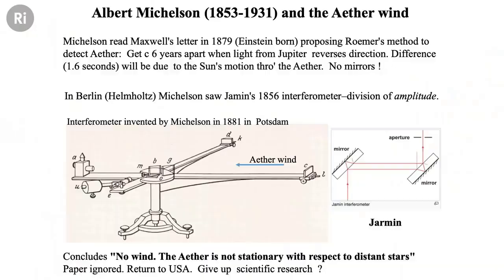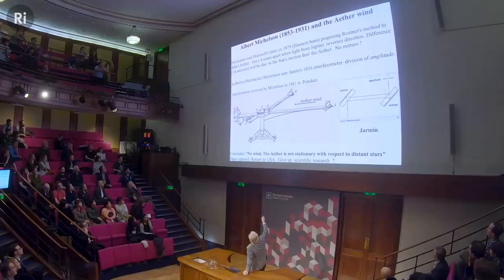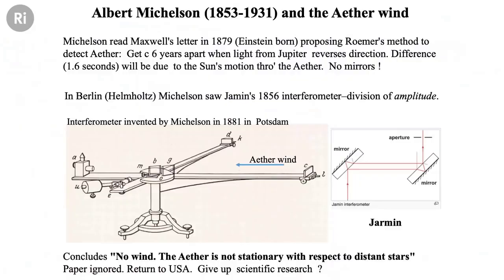He expected to find that light went faster depending on how the Earth's speed was with respect to the distant stars. Here's his interferometer — entirely his own original invention. He sent a beam of light; with the Earth moving to the right, the ether wind on the surface would be to the left. He sent a beam of light across the ether and back from a mirror, and then into it and back on another mirror. Like people swimming across rivers with a current, the time to go across and back is different from the time to go into it and back. Where the two beams meet, he let them interfere, and by that you could tell how long the two trips took.